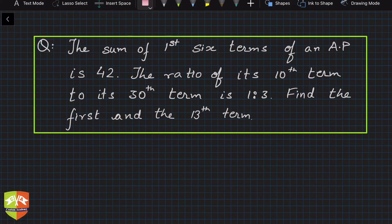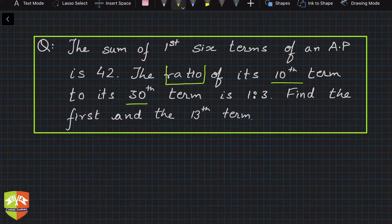Hello and welcome to another problem-solving session on sum of arithmetic progressions. Let's solve this given problem: The sum of first six terms of an AP is 42. The ratio of its tenth term to thirtieth term is 1:3. Find the first and thirteenth term.